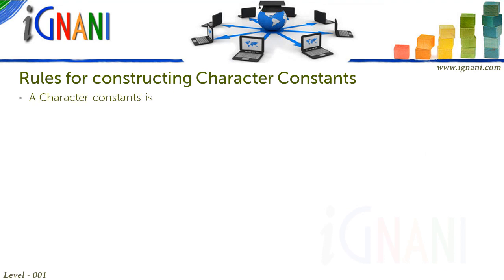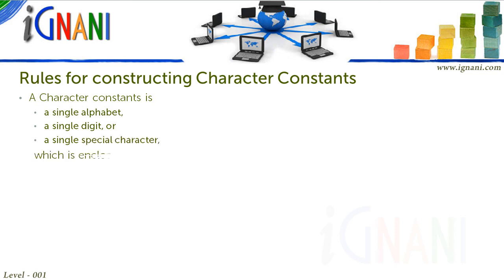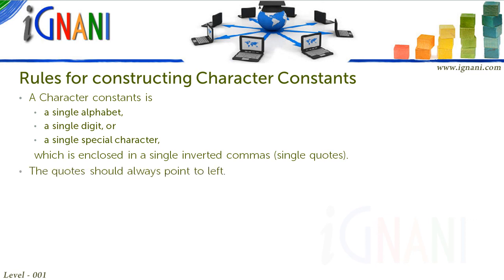A character constant is a single alphabet, a single digit, or a single special character, which is enclosed within single inverted commas. The quotes should always point to the left. While editors or IDEs handle the quotes properly, if you happen to copy the code from any other source, make sure they are not pointing in different directions.